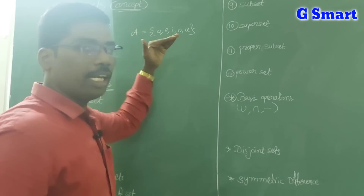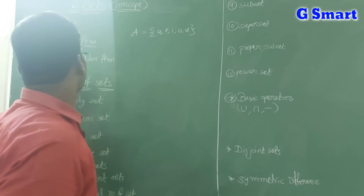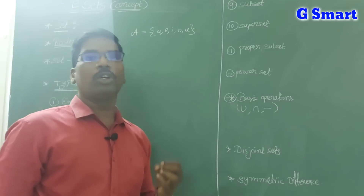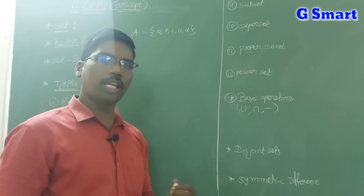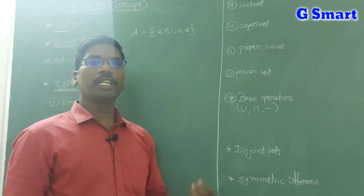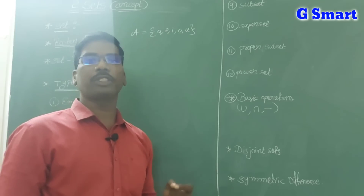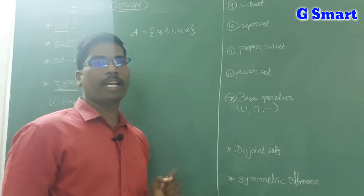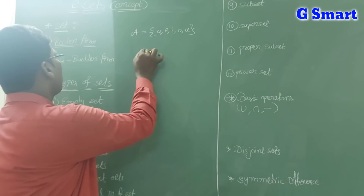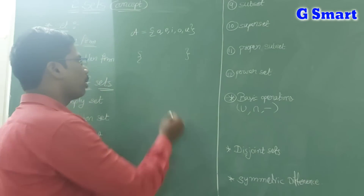Sets can be written in two forms: one is roster form and the other is set builder form. Roster form is also called tabular form or list form. In roster form, the elements in the set are written separated by commas and are kept in flower brackets (curly brackets).